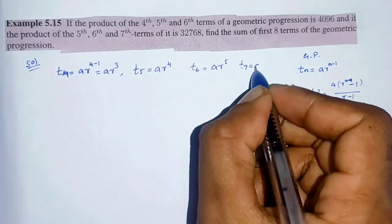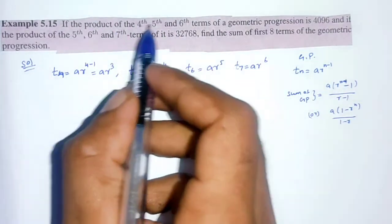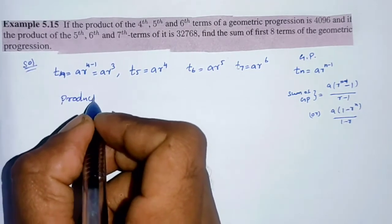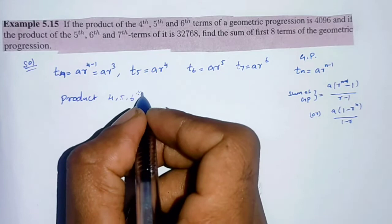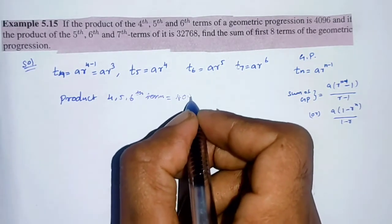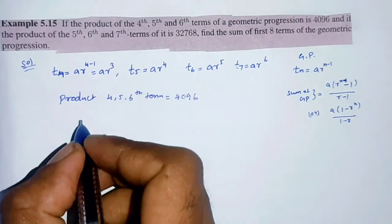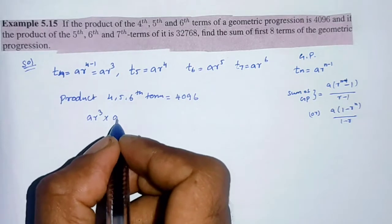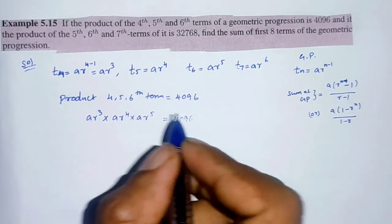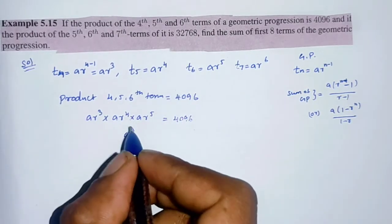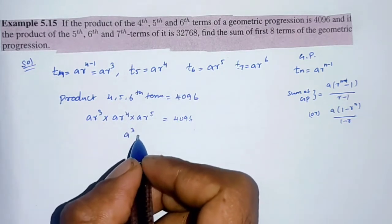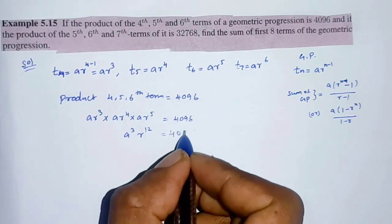The product of the 4th, 5th, and 6th terms equals 4096. That is: ar³ × ar⁴ × ar⁵ = 4096. This gives a³ · r^(3+4+5) = a³ · r¹² = 4096.